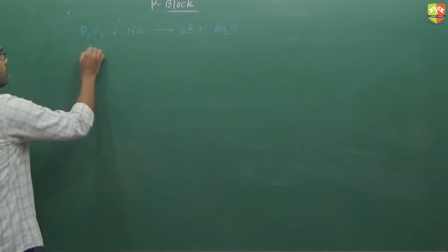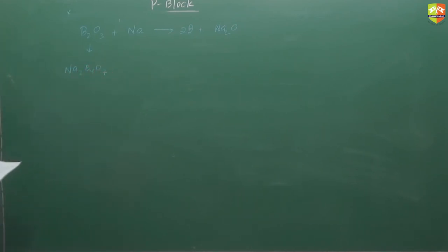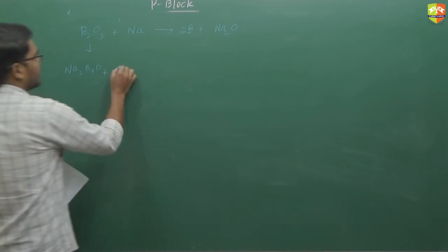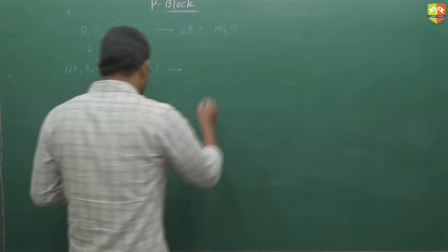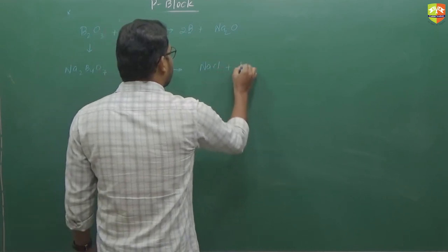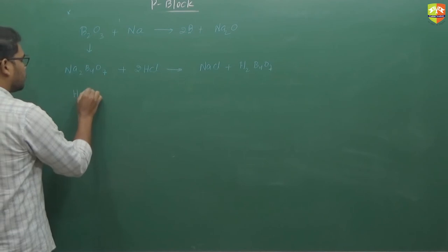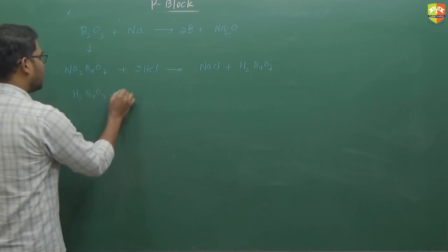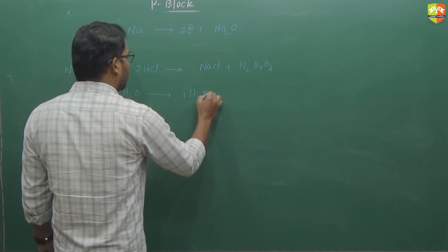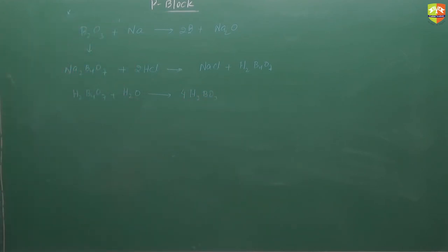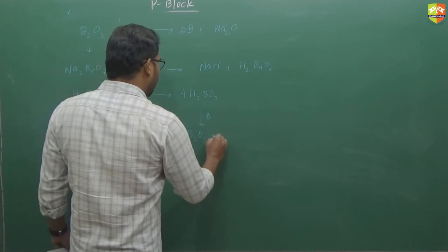B2O3 plus Na or K forms Na2O and boron. With potassium also it forms K2O. Now how this B2O3 we get, it is obtained from Na2B4O7, that is borax. Borax will react with HCl or H2SO4 and forms NaCl plus H2B4O7.